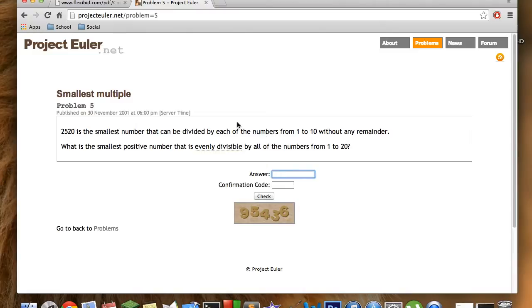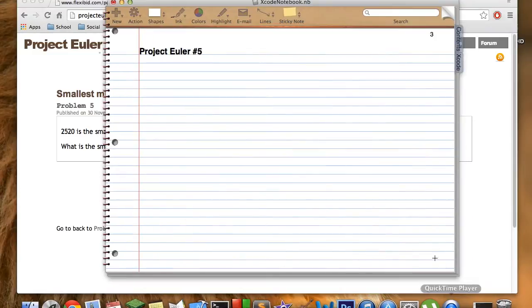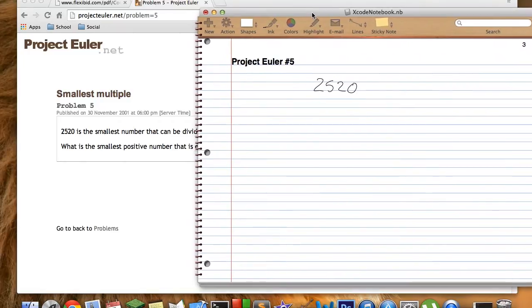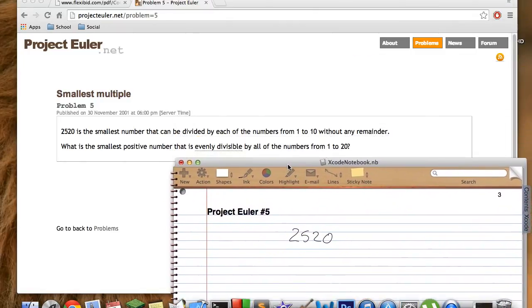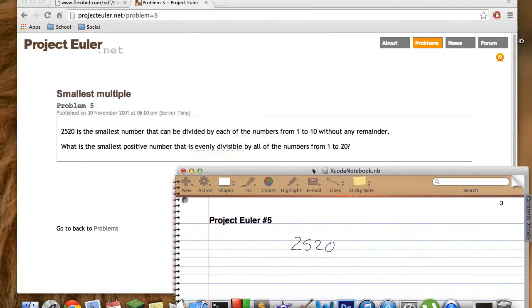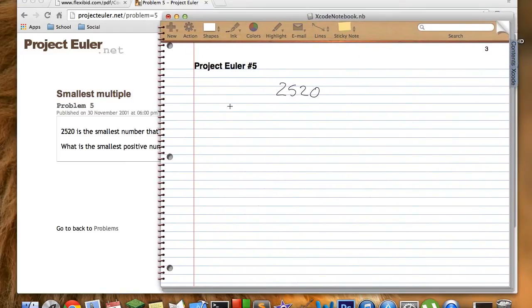We could just jump into the code right now but first I would like to show you a bit of mathematical logic that's going to dramatically improve the speed of our code. So our initial number is 2,520. We know from the beginning that we can start at this number instead of 0 or 2 because we want to be divisible by more numbers so it has to at least be this one.